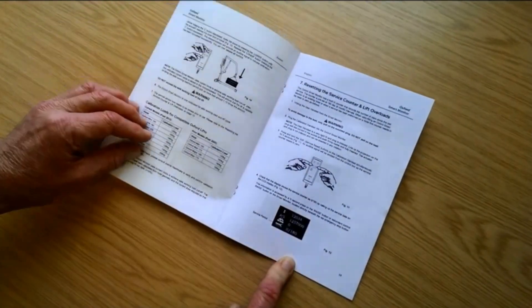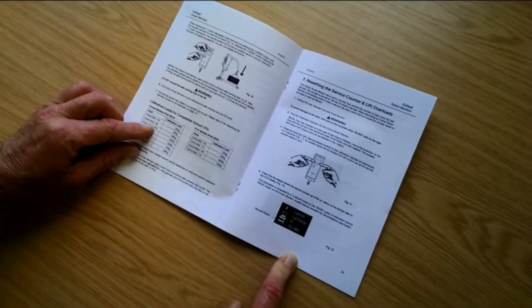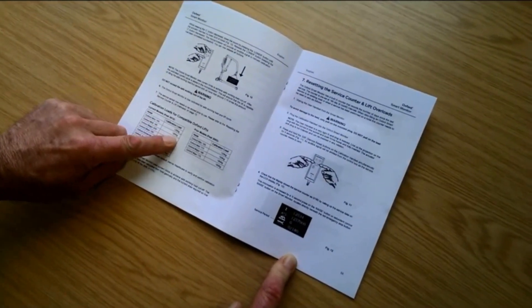Next, attach the correct load to the hoist in accordance with the calibration weight table in the service and installation manual.